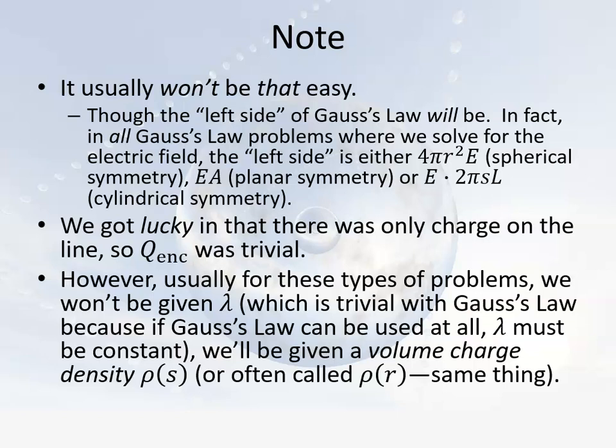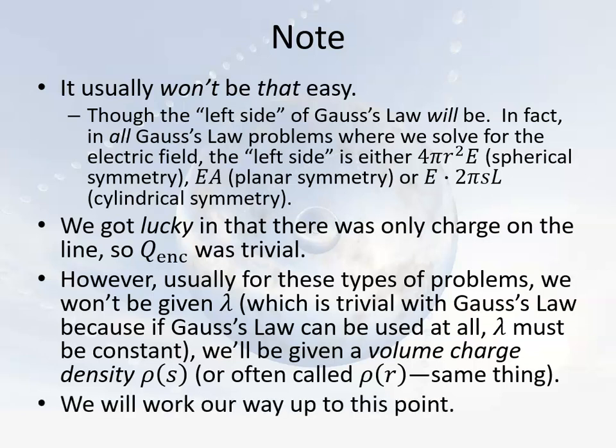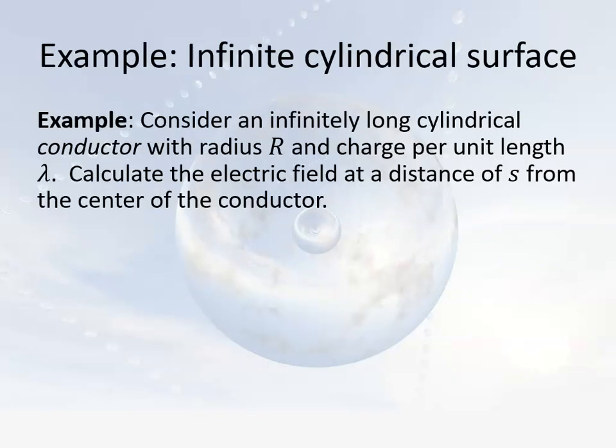Usually for these types of problems you're not going to be given lambda. Instead you're going to be given a volume charge density, or sometimes even a surface charge density, for something like a cylindrical shell. If it's a surface charge density, you need to realize that for an imaginary Gaussian cylinder of length L, the total amount of charge is going to be equal to the area of what's enclosed — 2πsL — times the area charge density eta. Dealing with volume charge density is what we'll be getting to soon.